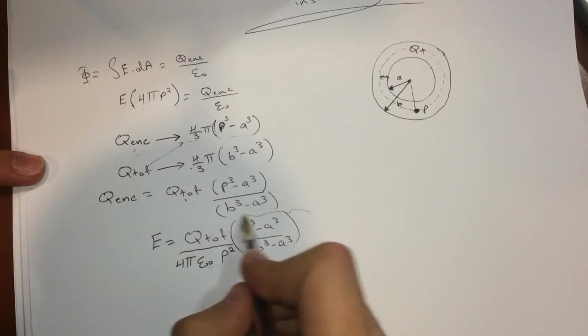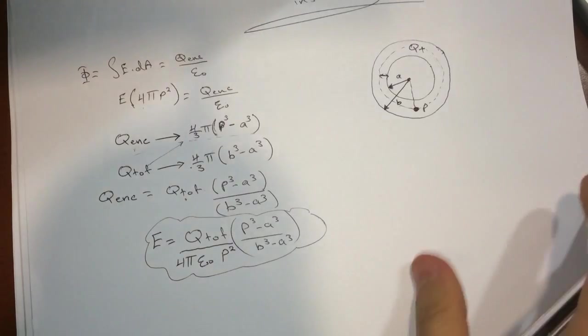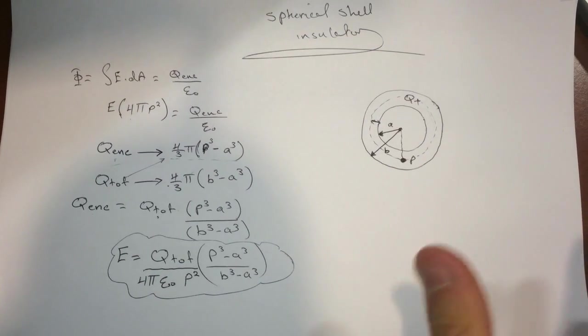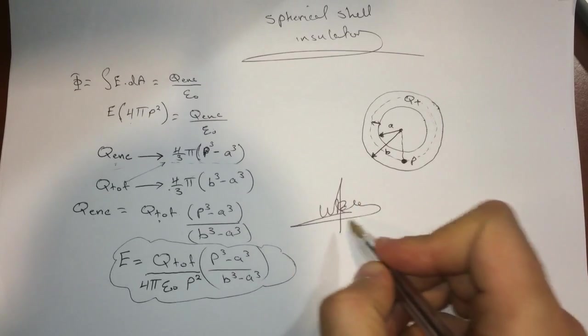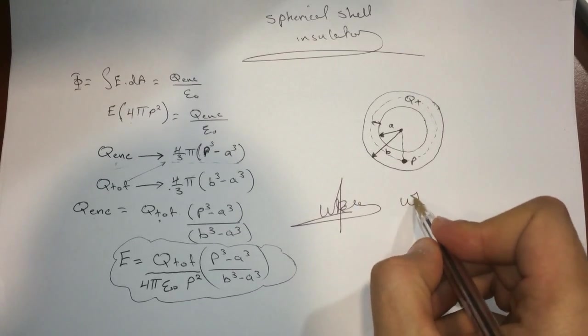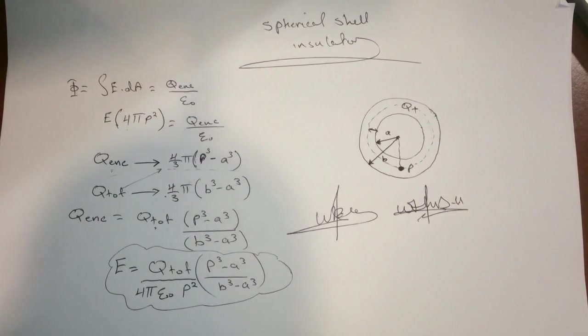So that's the equation you can use to find the electric field at point P inside the insulator. Alright guys, I hope this helped. All right, cool. Take care guys.